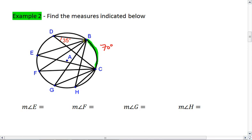Well then what do we know about angle E? Hopefully you realize that this one is also 35 degrees, because it also intercepts arc BC. Now notice angle F also intercepts arc BC, which means it is also 35 degrees.